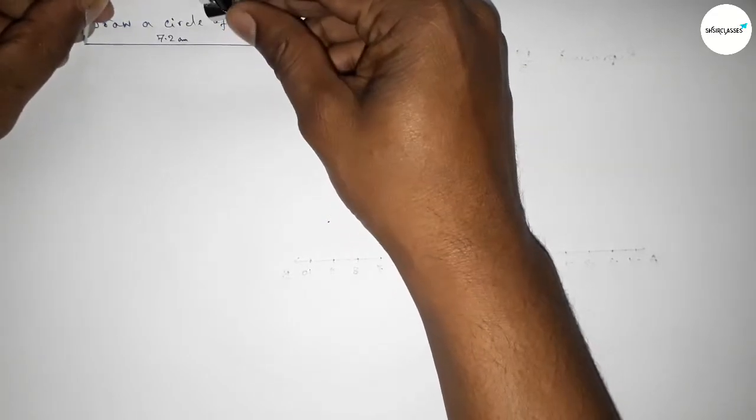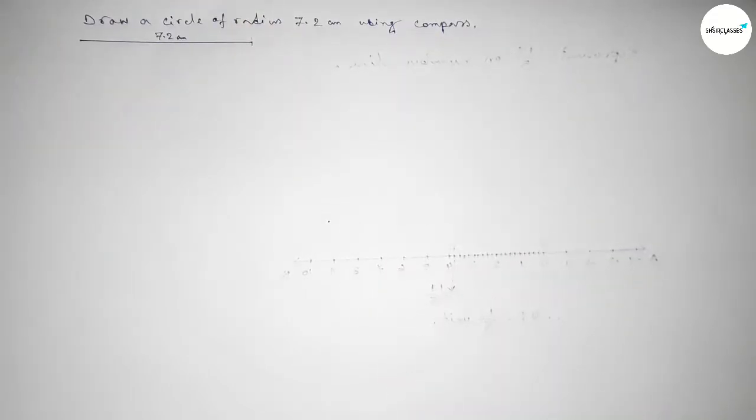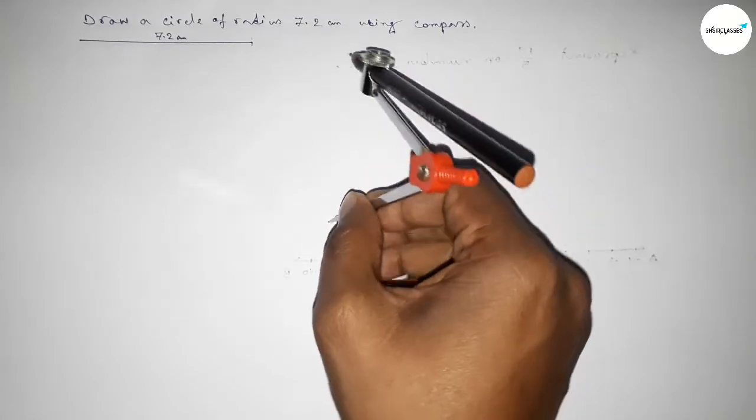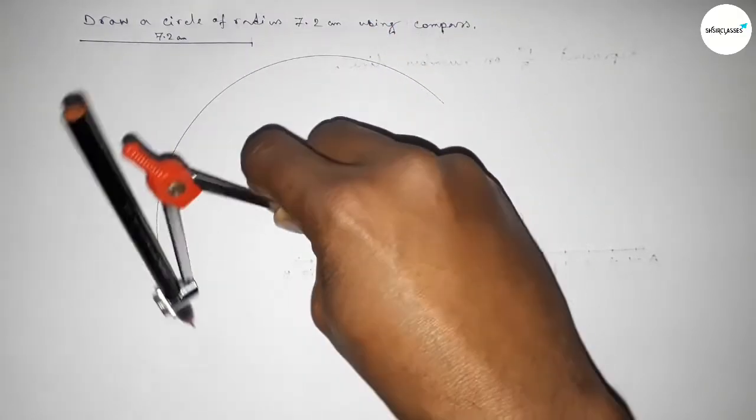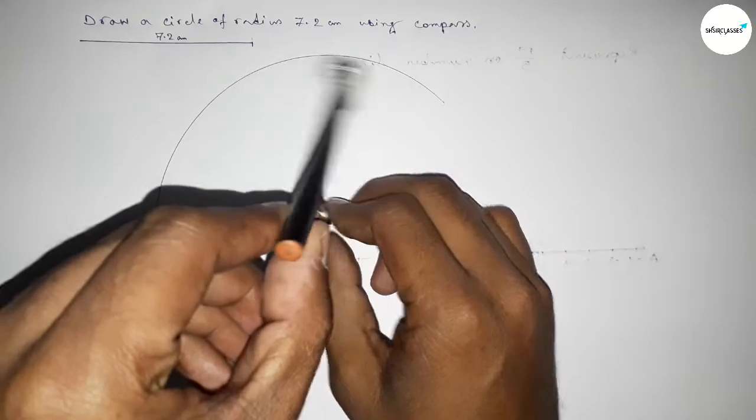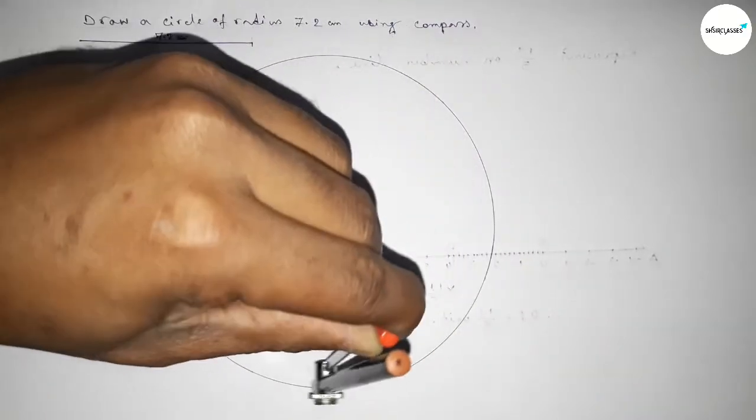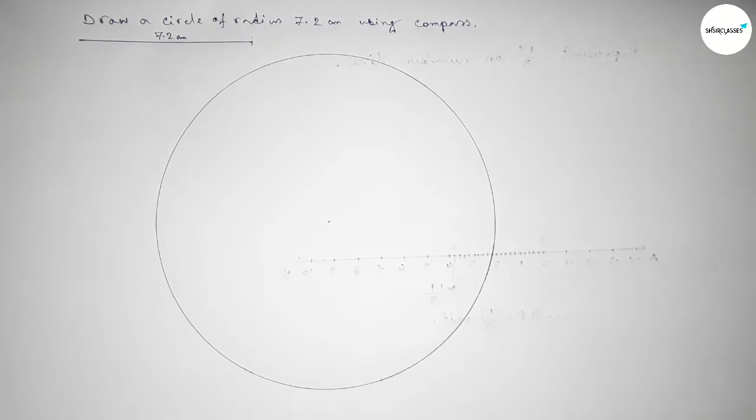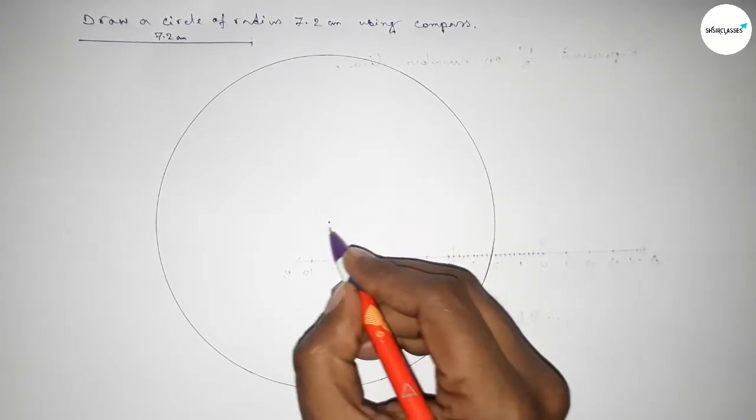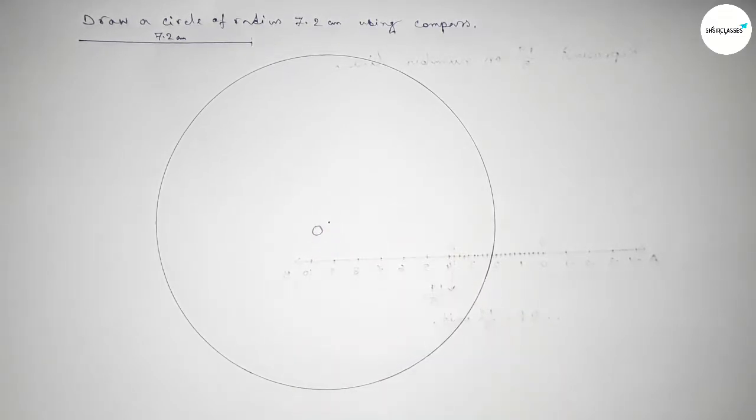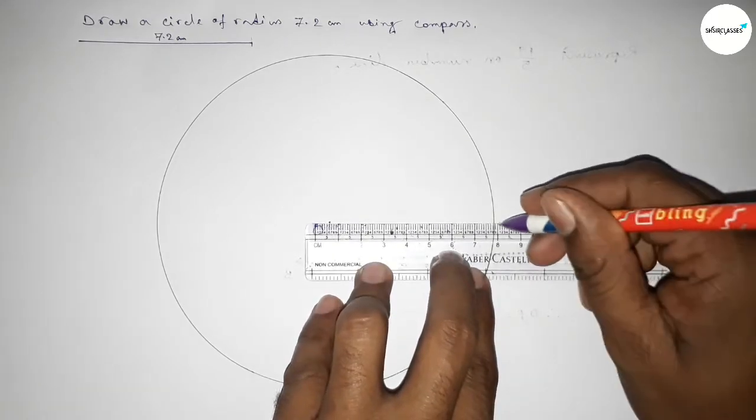Using the compass this way and putting the compass on the point here, now drawing an arc this way. It represents a picture of a circle. Taking the center O, now joining this.